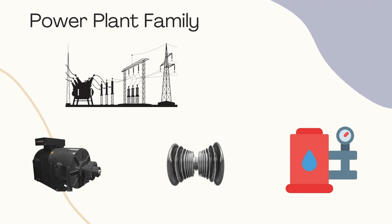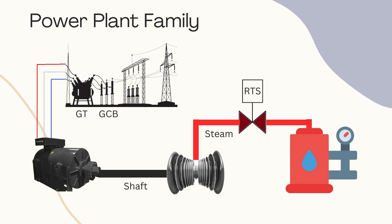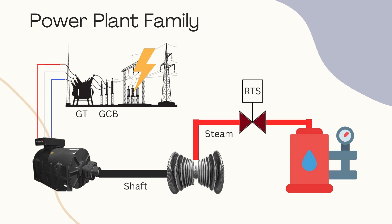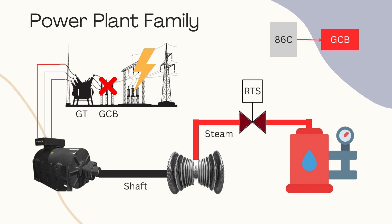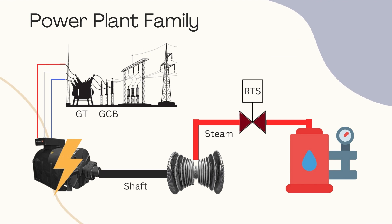However, there is a problem. Because the system is interconnected, if anything happens to any of these members, the system will not work and must be isolated to avoid damaging the rest. Suppose a fault occurs in the switchyard — the Class C relay gives the trip command to the Generator Circuit Breaker (GCB) to isolate the generator from the grid so that the generator stays away from the fault.